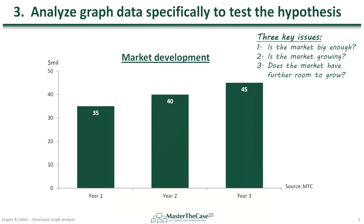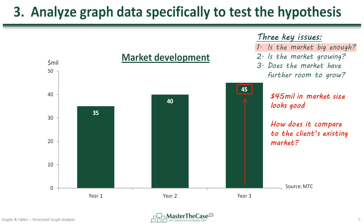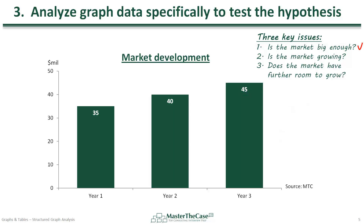To analyze the first key issue — is the market big enough? — we can see that the size of the market in the latest year three is $45 million. So we'll say that $45 million in market size looks good. Additionally, we will put this number in perspective by asking how it compares to the client's existing market. Let's suppose that the new market turns out to be twice as big as the existing market. This tells us that the new market is indeed big enough to appeal to the client, which positively answers our first key issue.